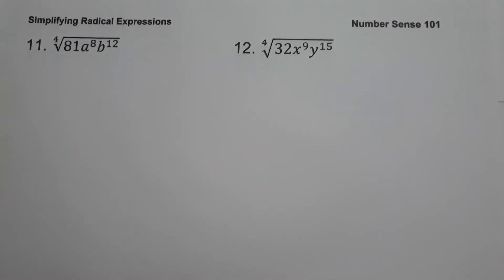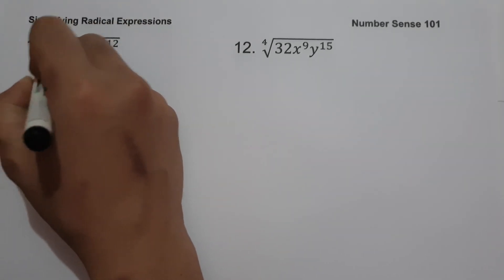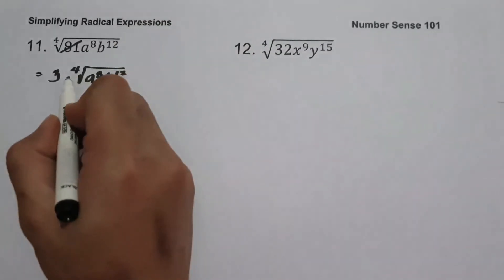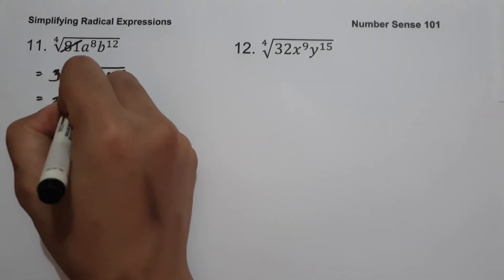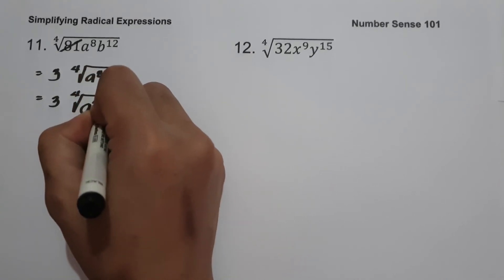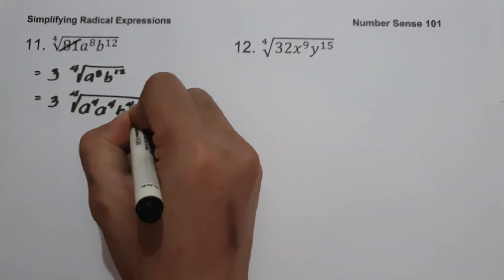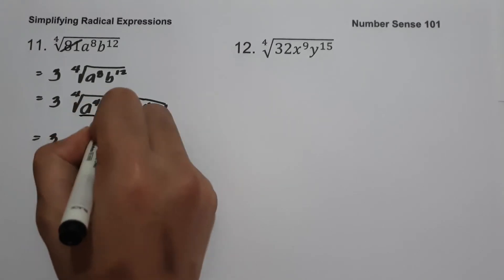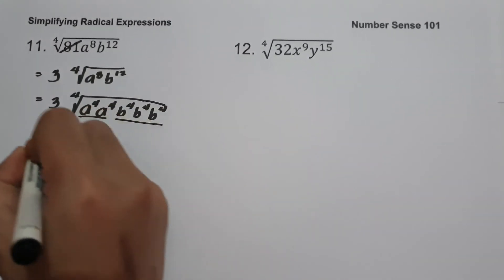On example number 11, we have fourth root of 81a raised to 8, b raised to 12. To simplify, the fourth root of 81 is 3. Since our index is 4 we divide the exponents of a and b by 4. We rewrite a raised to 8 as a raised to 4 twice — total is 8. For b raised to 12: b raised to 4 three times — total is 12. Since we have 2 a-to-the-4th terms we get a squared, and 3 b-to-the-4th terms give b cubed. So our answer is 3a squared b cubed.